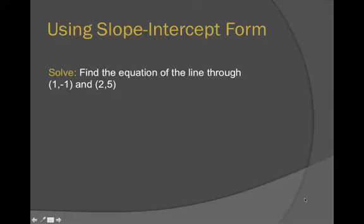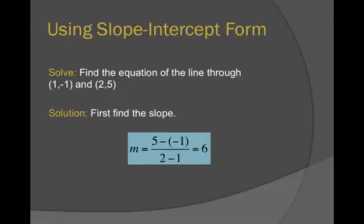What about this problem where we want to find the equation of the line through these two points? I'm going to work through this example using slope-intercept form. As we saw in the last lecture, what we have to do first when we don't have slope is find the slope. So I'm going to use y2 minus y1 over x2 minus x1. I get 5 minus negative 1 over 2 minus 1, which is 6 over 1, so 6 as my slope.